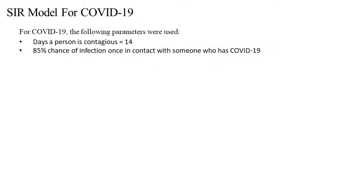For COVID-19, the following parameters were used. A person is contagious for approximately 14 days — a number reported by the CDC. Also, the chances of infection once a person is in contact with someone who has COVID-19 is set to 85%, a number obtained by speaking to physicians. These two numbers are set to be constant in our algorithm, though for future work these two numbers can also be estimated.